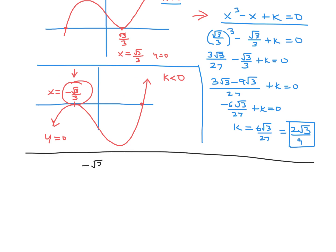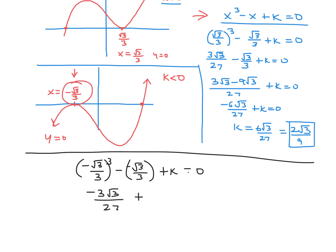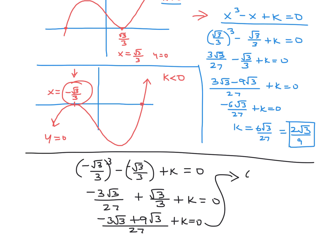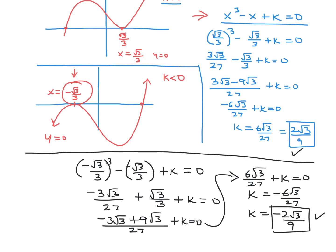That gives us negative 3 root 3 over 27 plus root 3 over 3 plus k equals 0. Multiplying to a common denominator of 27: negative 3 root 3 plus 9 root 3 over 27 plus k equals 0, so 6 root 3 over 27 plus k equals 0. Therefore k equals negative 6 root 3 over 27, which reduces to negative 2 root 3 over 9. The two values of k are opposite in sign.